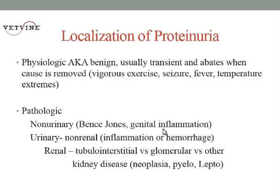After we detect that there's protein present, we want to localize it, because initially we said it has to be of renal origin to necessarily be something we worry about and want to treat. So physiologic, also known as benign proteinuria, is usually transient or resolves when the cause is removed.